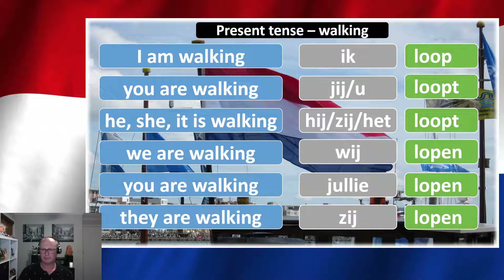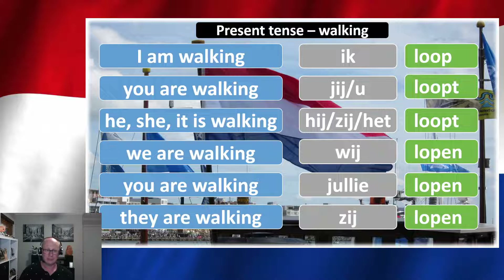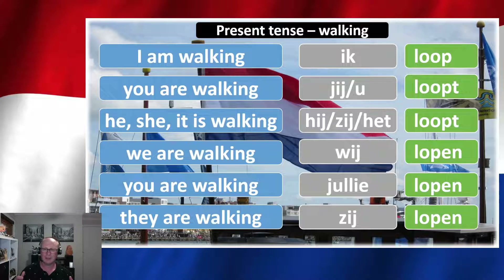When you're talking about yourself — ik — you use the verb on its own. In this case, 'to walk' is lopen, so ik loop. When you're talking about a single person that's not yourself — a jij, zij, hij, or het — you add a T on the end: loopt. And when you're talking about a plural group, whether that's ze (they), jullie, or we, you use lopen, adding -en on the end.